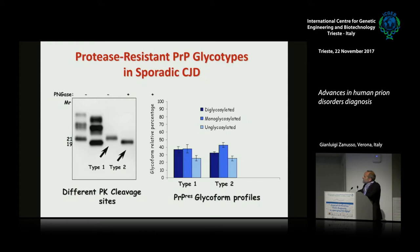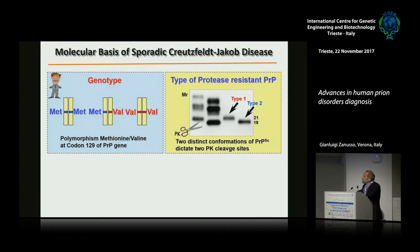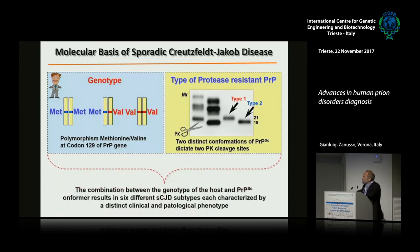Another influence on disease phenotype is the presence of protease-resistant PRP. There are two types described by Gambetti in 1996: type 1 and type 2, based on different migration in the gel. The different migration is based on a different cleavage of protease digestion at the N-terminus. This means the different cleavage site is related to different conformation of PRP-SC, commonly called strain.